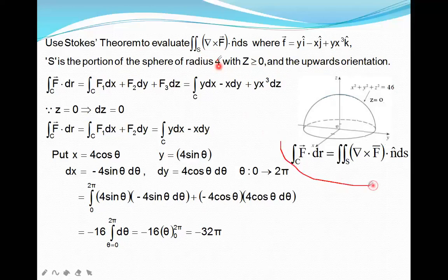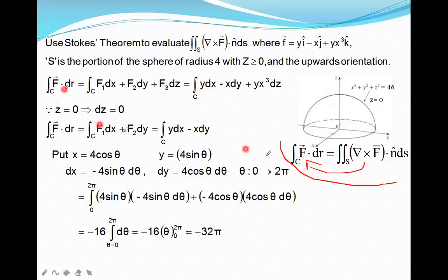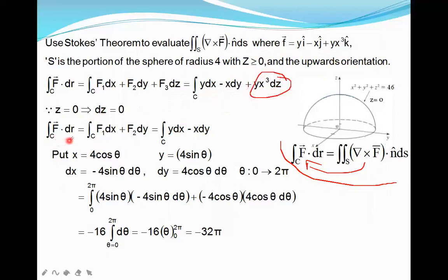By Stokes theorem, the integral of f bar dot dr over curve C equals the double integral of del cross f dot N dS over surface S. We convert the double integral into the line integral: integral of f1 dx plus f2 dy plus f3 dz. Here f1 is y, f2 is minus x, and f3 is y x cubed. Since z equals 0 on the boundary, dz equals 0, so that term vanishes. Therefore the integral reduces to the integral of y dx minus x dy.